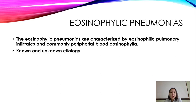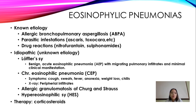Eosinophilic pneumonias are characterized by eosinophilic pulmonary infiltrates and commonly peripheral blood eosinophilia. Known etiologies include allergic bronchopulmonary aspergillosis, parasitic infestations, and drug reactions. Idiopathic (unknown etiology) forms include Löffler's syndrome — a benign acute eosinophilic pneumonia with migrating pulmonary infiltrates and minimal clinical manifestations.